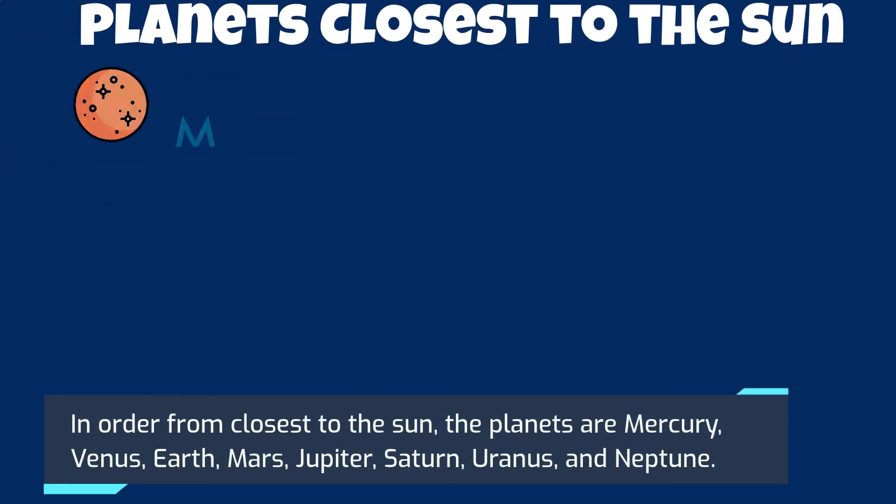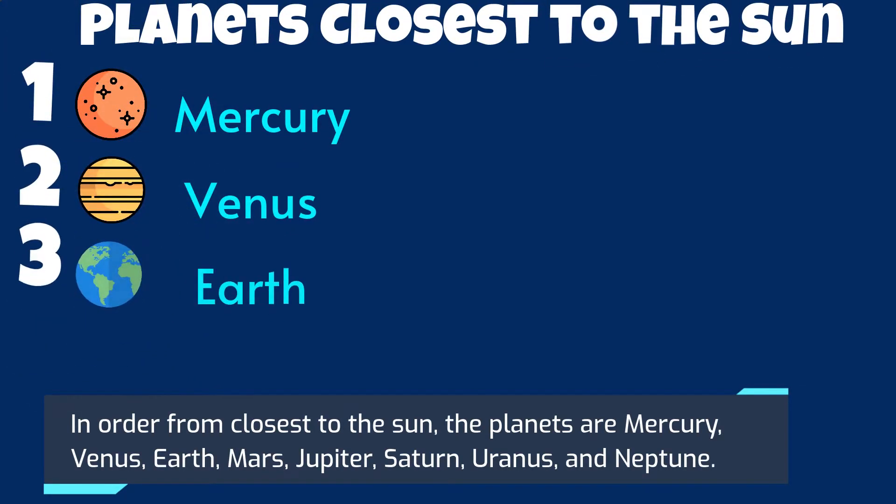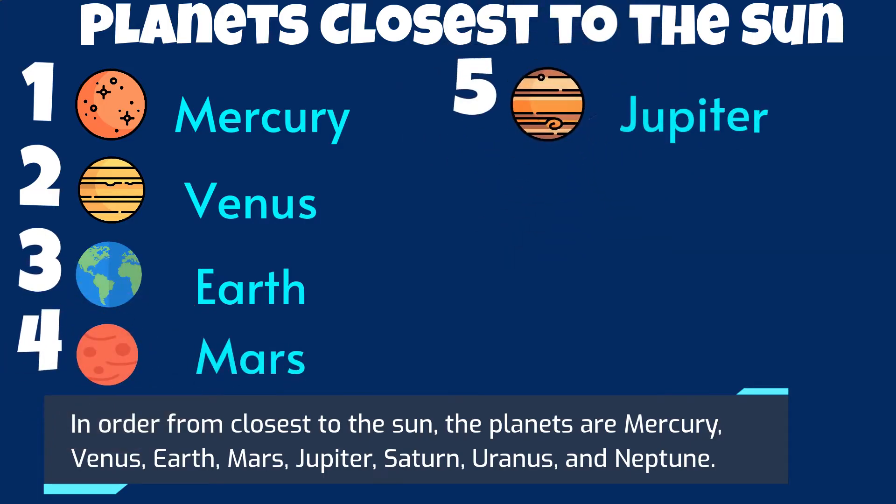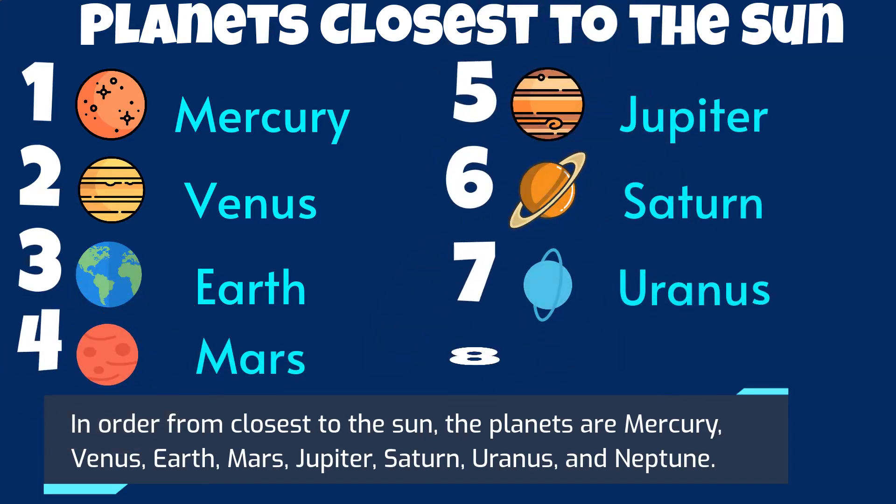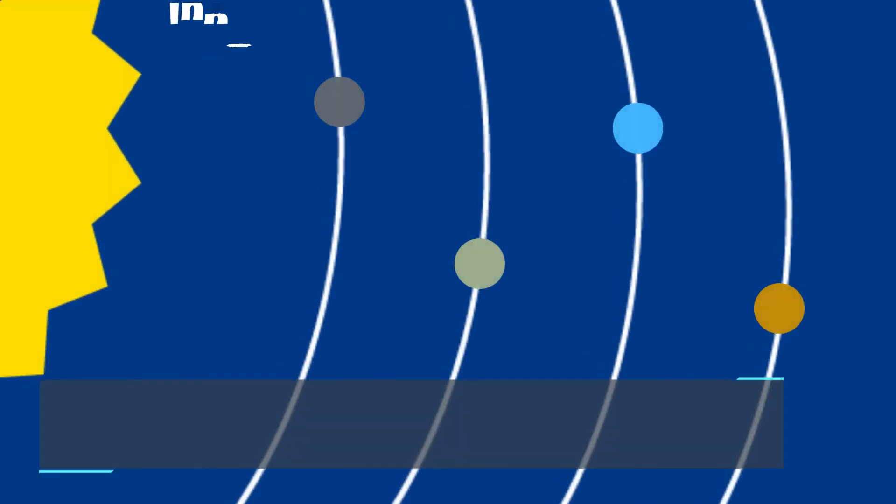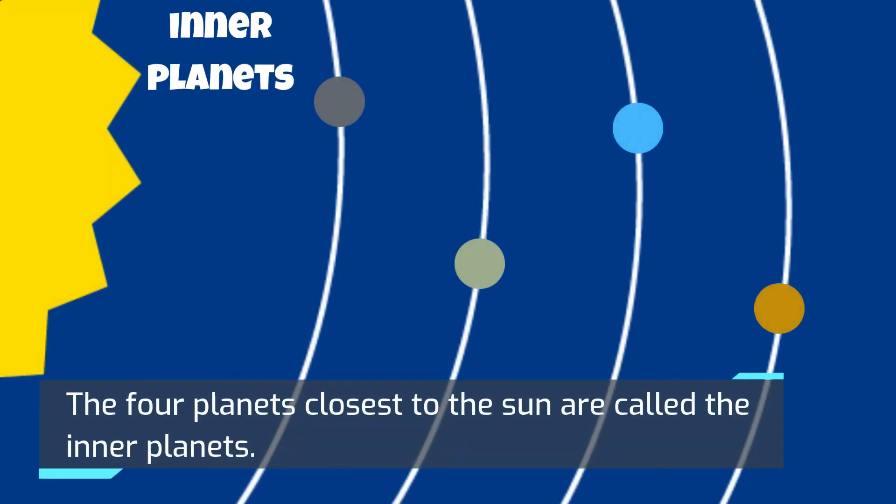In order from closest to the Sun, the planets are Mercury, Venus, Earth, Mars, Jupiter, Saturn, Uranus, and Neptune.